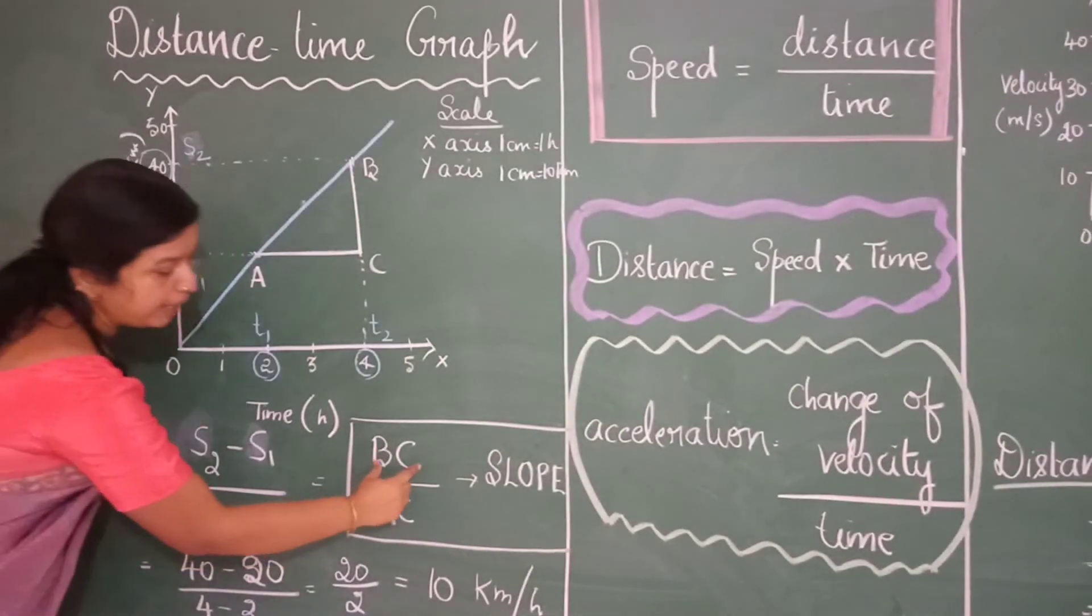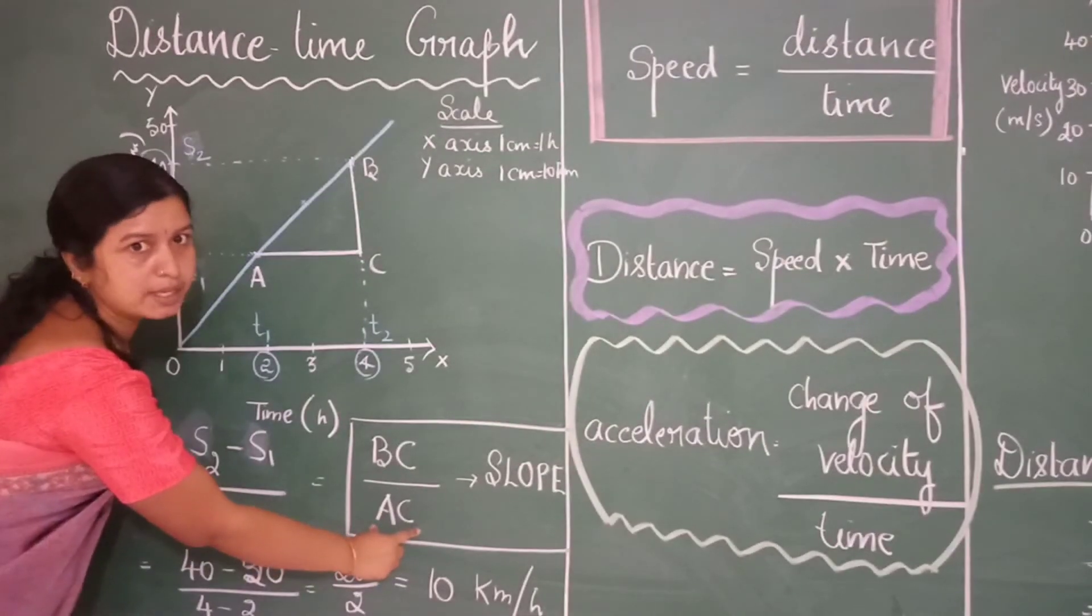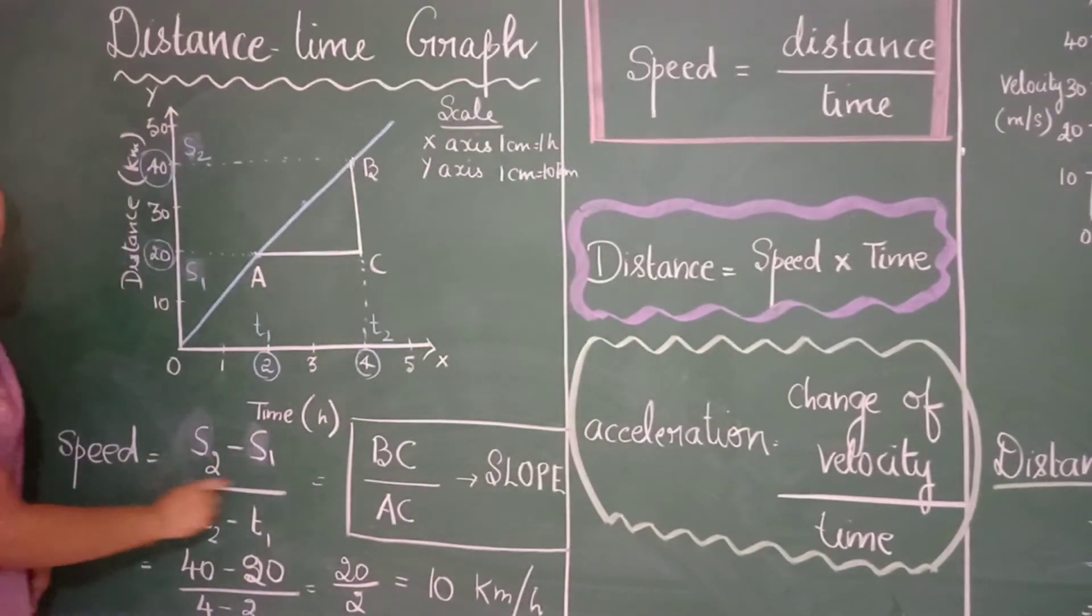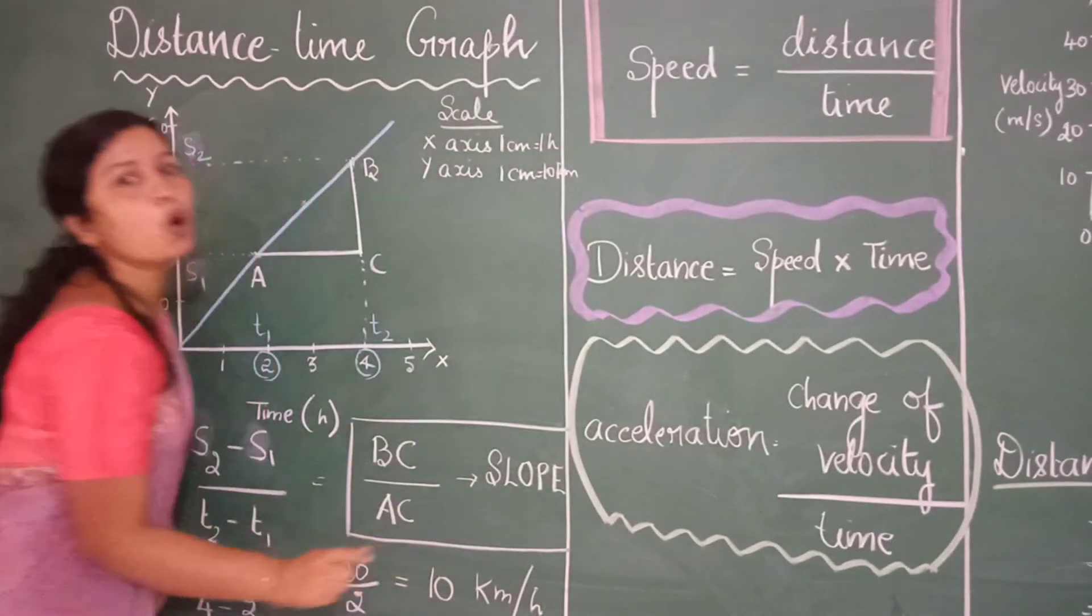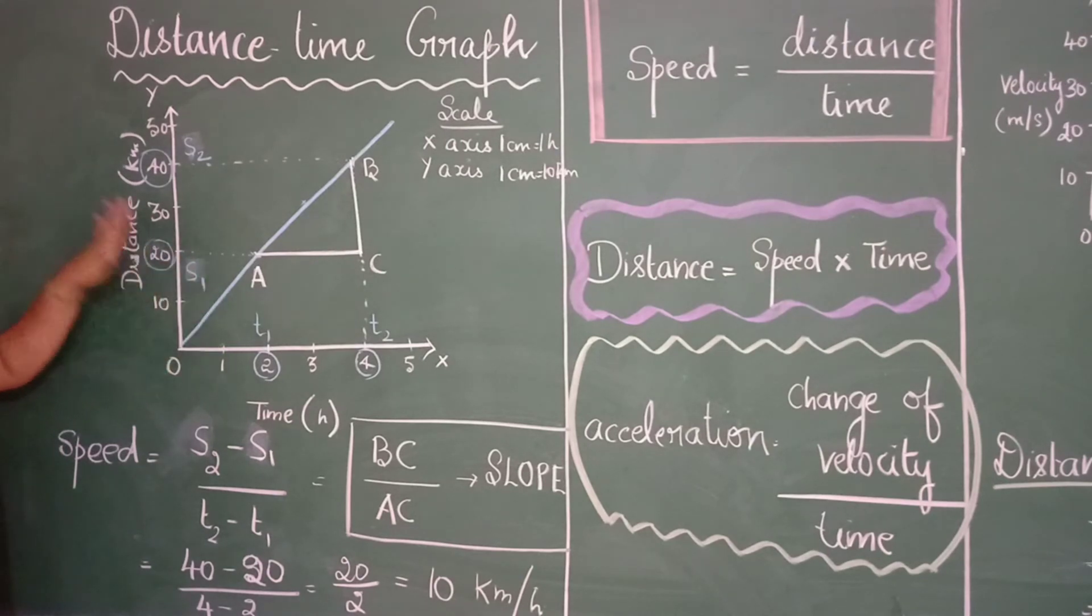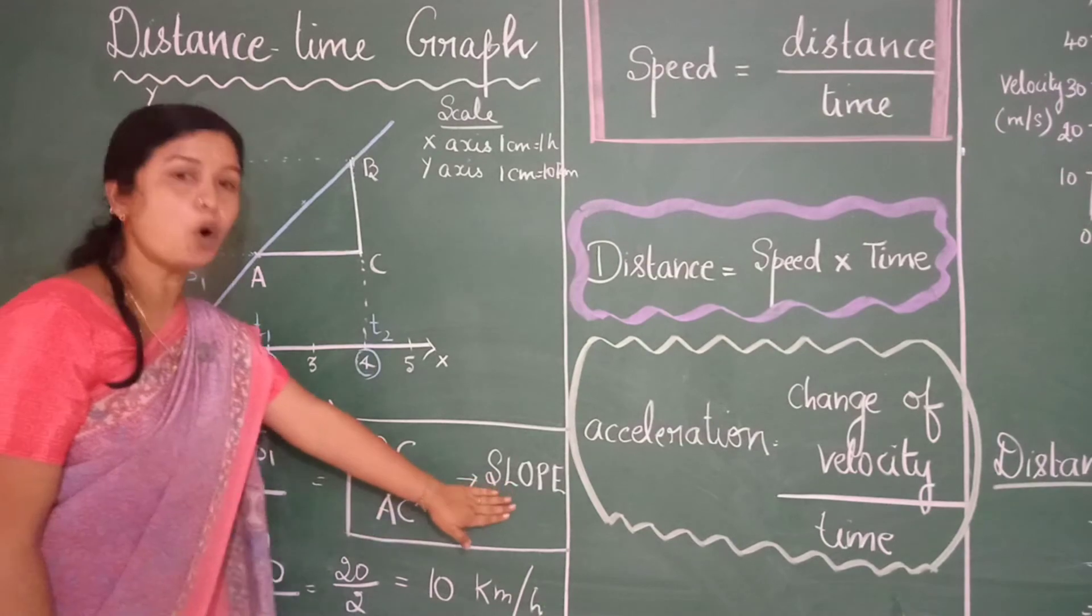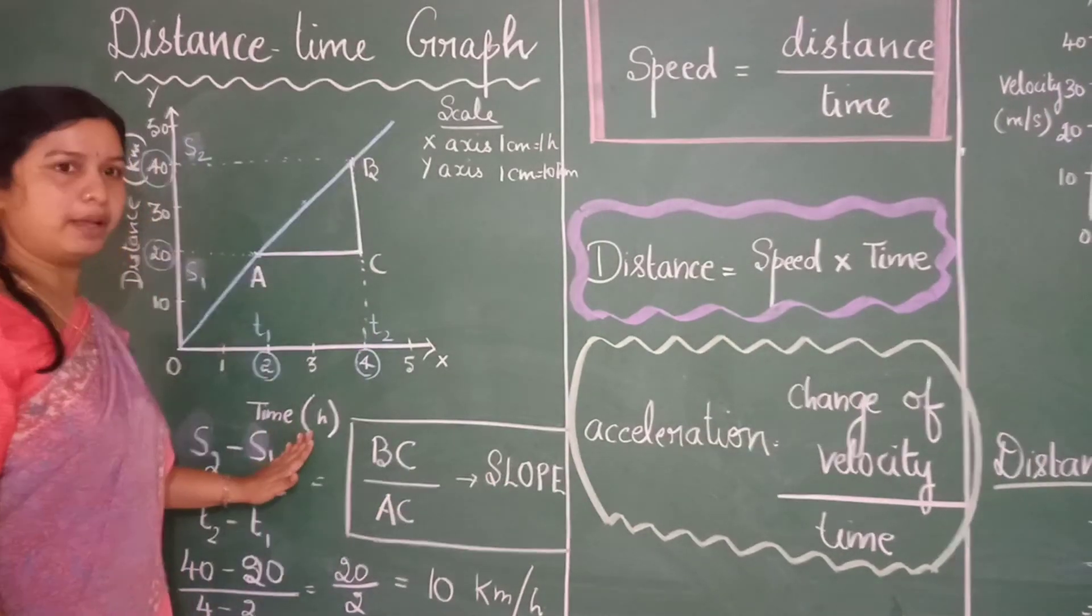So this bc by ac which helps us to calculate the speed is termed as the slope of the graph. And slope of the distance time graph will help you to calculate the speed of the moving object. Remember speed can be calculated by using slope of a distance time graph.